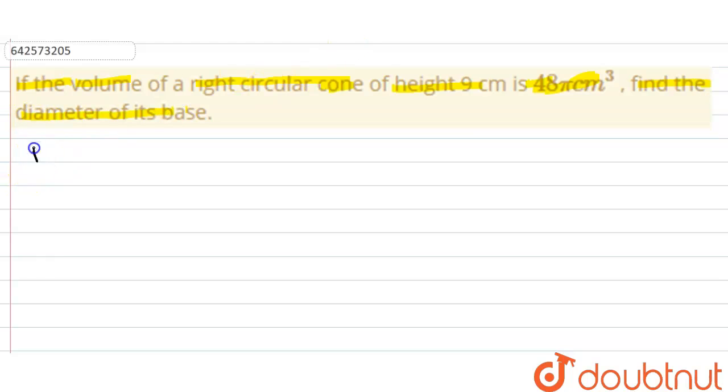So first write down the given information. The volume of cone is 48π centimeter cube. This is the volume given for the cone. And the height value for the cone is given as 9 centimeter.